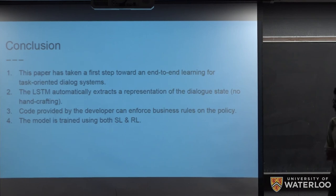Now we can come to the conclusion that this paper has taken the first steps towards an end-to-end trainable model for task-oriented dialogue systems. The LSTM network automatically extracts and infers a representation for the dialogue history without any hand crafting. In point three, we saw that the code provided by the developers could be used to encode business rules or logics easily into the system. And we also saw that this model could be trained using both supervised learning and reinforcement learning. As we saw in the experimental results, if we use even a very small number of dialogues in the supervised learning phase, we can get a reasonable policy and a pretty high accuracy. And if we use this model as the initial model for the reinforcement learning optimization, this would accelerate the reinforcement learning optimization substantially. Okay, that was my presentation. Thank you.